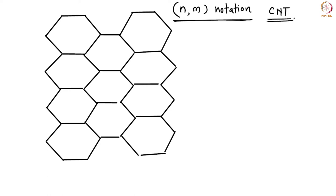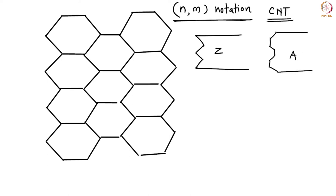You probably remember that zigzag-type carbon nanotubes have a certain end structure, while armchair-type carbon nanotubes have another. To define the axis and orientation of your carbon nanotube, you use the NM notation. I'm describing it here because NM notations are also occasionally used for understanding defects in graphene — if you want to tell somebody where a non-six-membered ring is situated, you give the NM coordinate as the position.